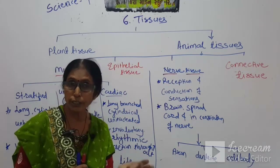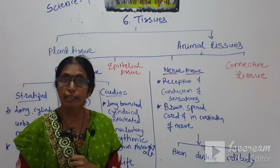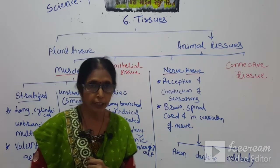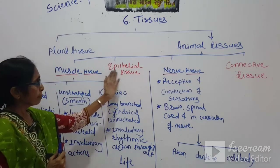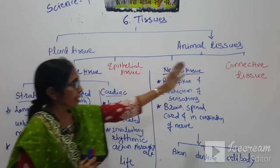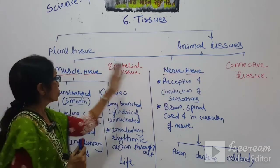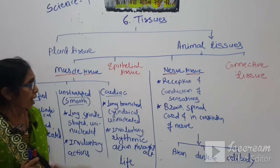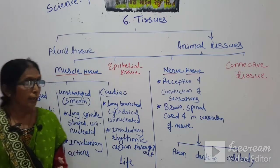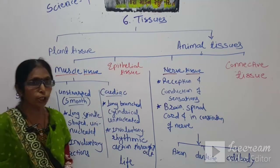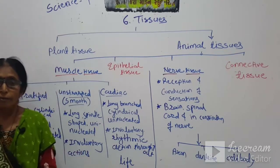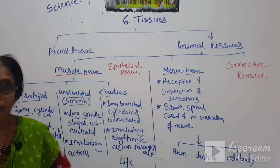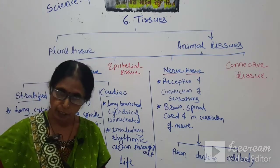Students, we have started with animal tissues. There are four main types: epithelial tissues, connective tissues, nerve tissue, and muscle tissues. Out of these four types, we have discussed the characteristics of epithelial tissue and connective tissues.